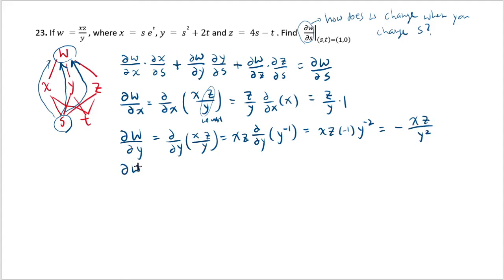How about differentiating w by z? Well, that's differentiating by z, xz/y, and in this case, this is considered as a constant. So that's brought outside. And you differentiate z by z, which is 1, so you just get x/y.